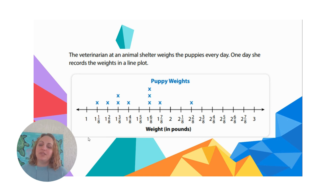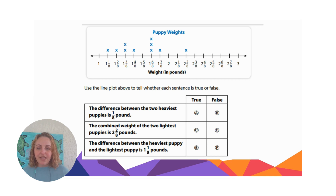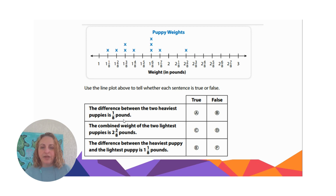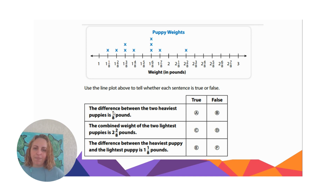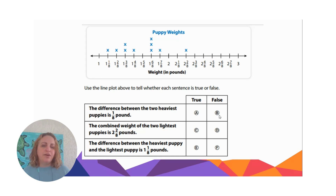Let's look at some true or false questions about this line plot. True or false: the difference between the two heaviest puppies is one eighth of a pound. The two heaviest puppies are two and two eighths and one and seven eighths. If I do two and two eighths minus one and seven eighths, I can count on my number line — it's three eighths different, not one eighth. So that one is false.